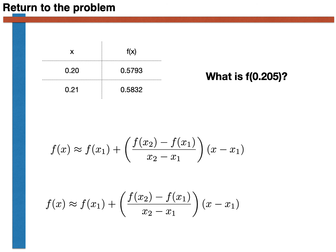If we say that x1 is 0.2, then we can assert f(x1) is 0.5793 in here. If x1 is 0.2, then x2 must be 0.21. We thus assert f(x2) equals 0.5832 here, and f(x1) equals 0.5793 in here again. The denominator is similarly straightforward, x2 is equal to 0.21 and x1 is equal to 0.20 as shown here.